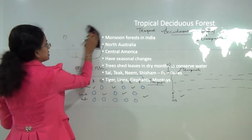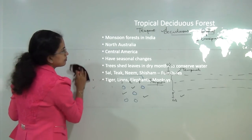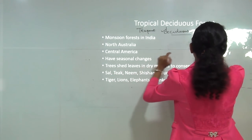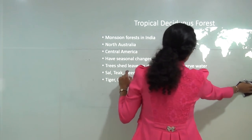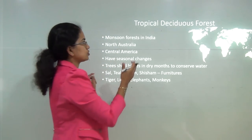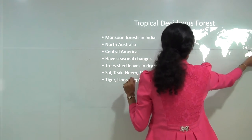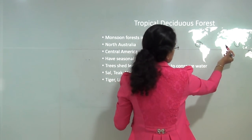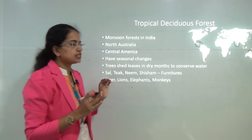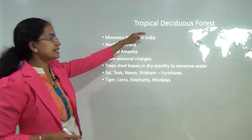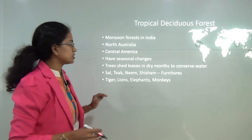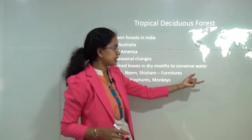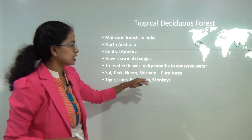The next type is tropical deciduous forest. These occur in the tropical region and are mainly the monsoon forest areas. In India, the maximum percentage of land is covered by tropical deciduous forest. Monsoon areas are generally prone to this type of vegetation. Examples include North Australia, the monsoon regions of India, Central America, and coastal Central Africa. Deciduous trees shed their leaves in summer to conserve water and reduce transpiration. Common trees are sal, teak, neem and shisham — all used for making furniture. Common wildlife includes tigers, lions, elephants, monkeys and langurs.